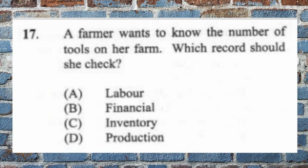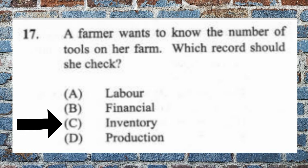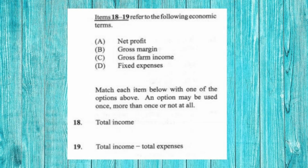Question 17: A farmer wants to know the number of tools on her farm. Which record should she check? (a) labor, (b) financial, (c) inventory, (d) production. The answer is C, inventory. An inventory is a listing of all the items that the farm owns.